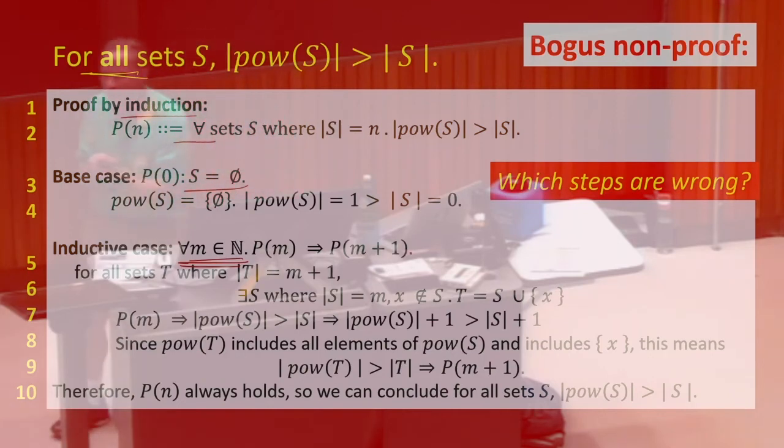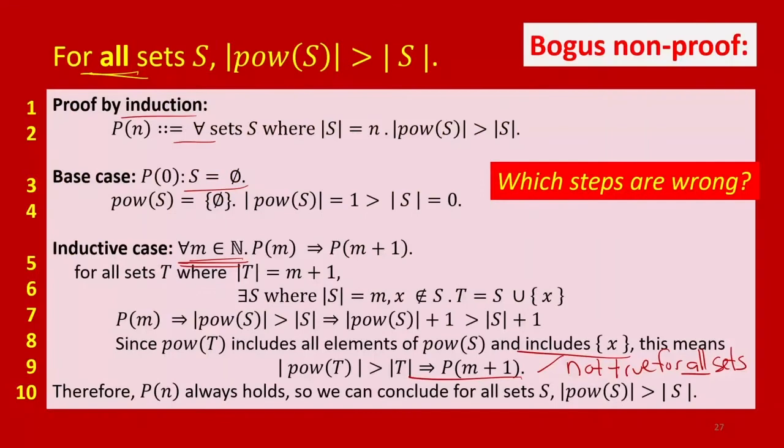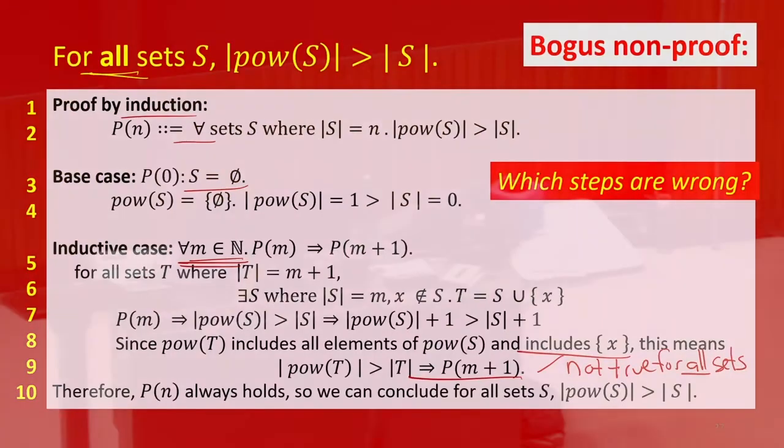Is there anything else that's wrong? Yeah. The transition between infinite sets. Yes. This is not true. This is only true for finite sets. And in fact, our definition of infinite sets is that these are sets where that's not true. So there's a lot broken.